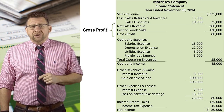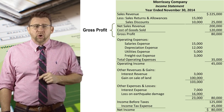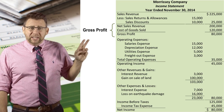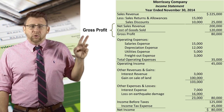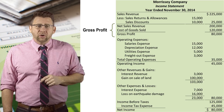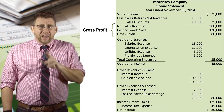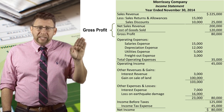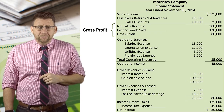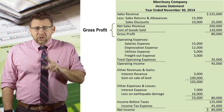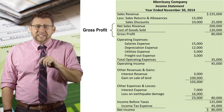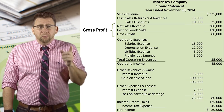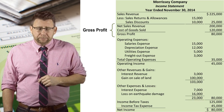The next important subtotal is gross profit, calculated by taking net sales revenue minus cost of goods sold. At this point, cost of goods sold is the only expense deducted in this section. Gross profit is the amount that inventory was sold for more than the cost of inventory.